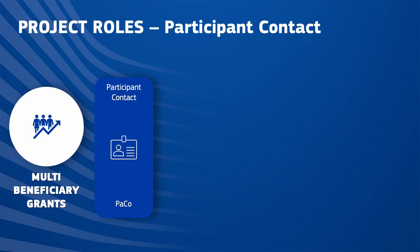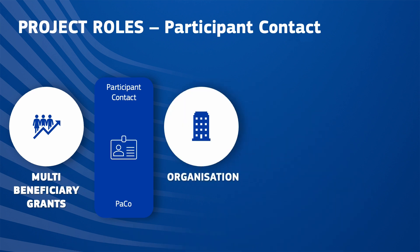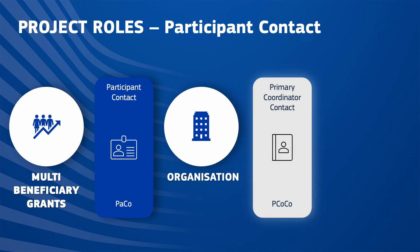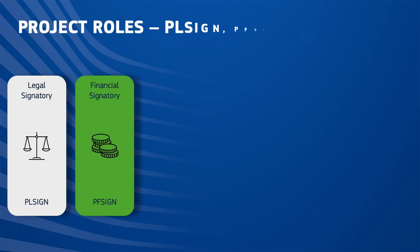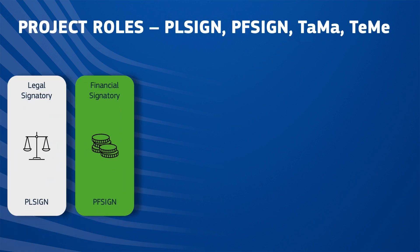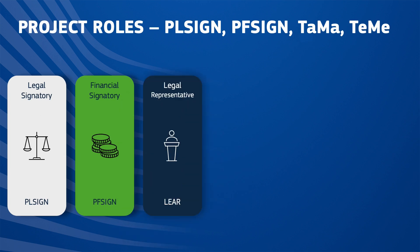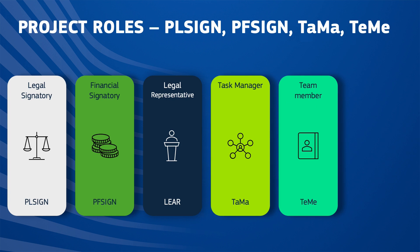Participant Contacts are the counterparts for non-coordinating beneficiaries. They can either nominate or revoke each other within their organization, or be nominated or revoked by the Primary Coordinator Contact and the Coordinator Contacts. Project Legal and Financial Signatories are chosen at the level of the project after being nominated by the LEAR or the Account Administrator. Please note that they can't do anything at this point — they will need to be appointed to individual projects.